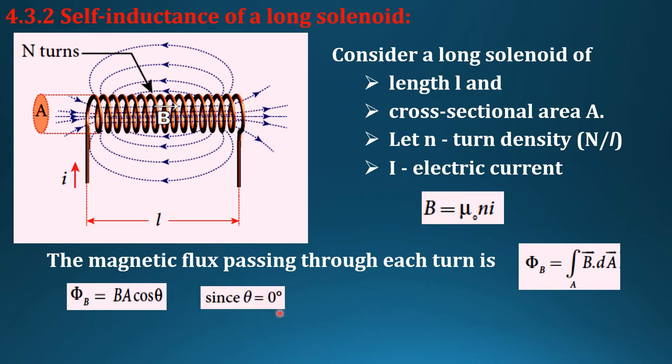Since theta is equal to zero, why do we take theta to be zero? See, the area is here, area is in this direction, so unit vector of A will be along x axis. Unit vector is always perpendicular to the area, and so it will be along x axis. But B produced is also along the x axis, and so the angle between vector B and vector A is zero.